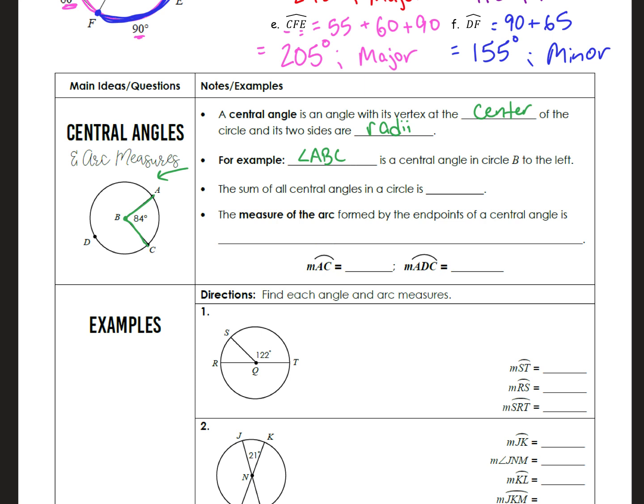The sum of all central angles in a circle is 360 degrees. One of the key things I'm going to teach you today is that the measure of the arc formed by the endpoints of a central angle is congruent to the central angle itself.